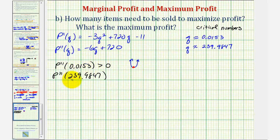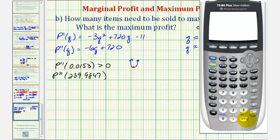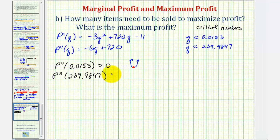Now we find the sign of the second derivative at the second critical number. We compute negative 6 times 239.9847 plus 720. The function value is negative, meaning the second derivative is negative and the function is concave down, so at this critical number we have a high point or a maximum function value.